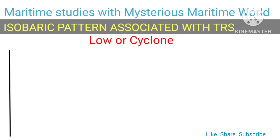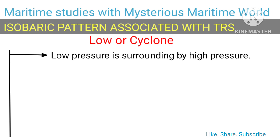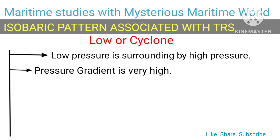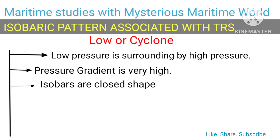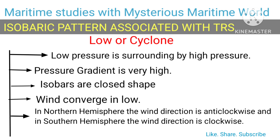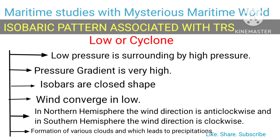The isobaric pattern of a TRS: low pressure is surrounded by high pressure with a very high pressure gradient. The isobars are closed in shape and wind converges in the low. In the Northern Hemisphere, the wind direction is anti-clockwise, and in the Southern Hemisphere the wind direction is clockwise. This leads to the formation of various clouds and precipitation.